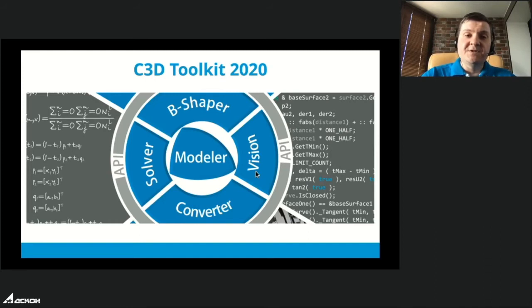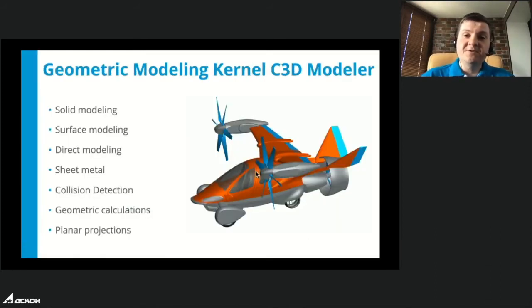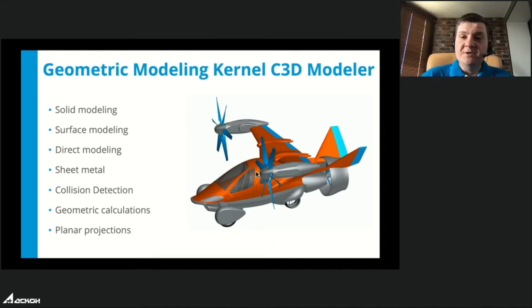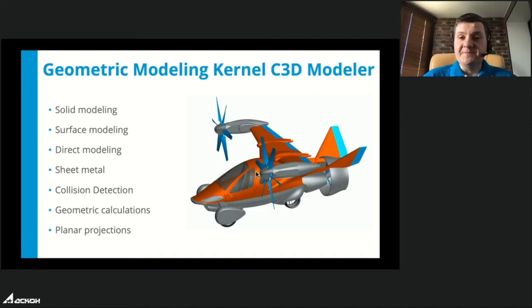The main part of our toolkit is a Geometric Modeling Kernel — quite a classic kernel based on boundary representation. We've been developing this kernel for more than 25 years. It provides functionality for solid and surface modeling, direct modeling, sheet metal modeling, and additional functions like collision detection, geometric calculations, and planar projections. Using this kernel, you can develop your own CAD system for 3D and 2D, or add 3D functionality to your CAM or other software.